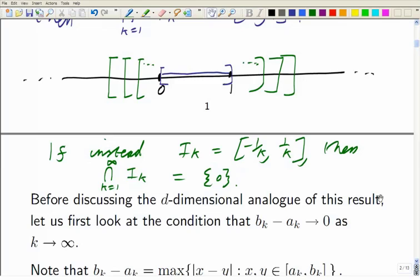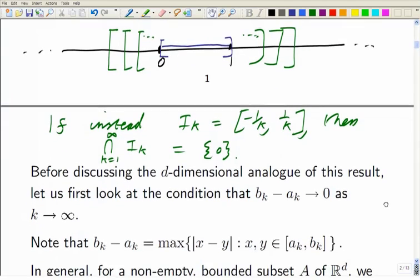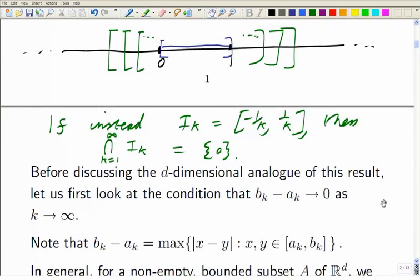So what is that b_k minus a_k tending to 0? Well, as I say, that's the sort of length of the interval. Another way of seeing it is it's about as far apart as the points can be. If you take two points in one of these intervals, a_k, b_k, then the furthest apart they can be is b_k minus a_k. That's the length of the interval. It's also what you can call the diameter of the interval, because it's the furthest apart two points can be.